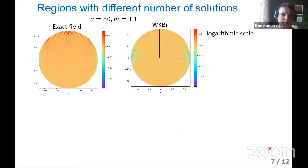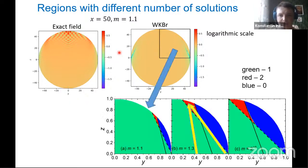Then we compared electric field maps for exact field and for WKB-R method. They qualitatively match, especially for optically soft particles when the wave amplitude decreases. Here you can see these waves. Then we divided this part into different regions. Green region for one solution, red region for two solutions, and blue region for no solution.